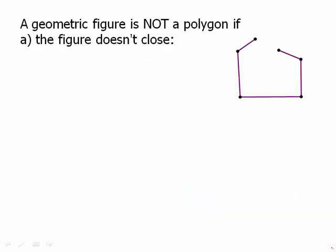A geometric figure is not a polygon if first of all the figure doesn't close. So for example something like this is not a polygon, has none of the polygon properties.